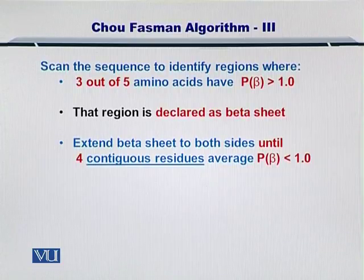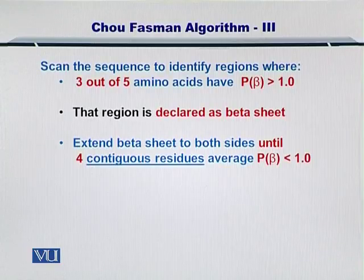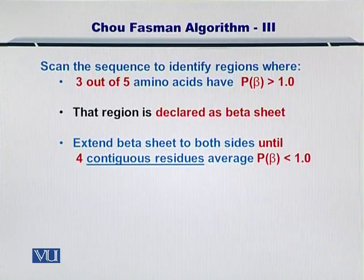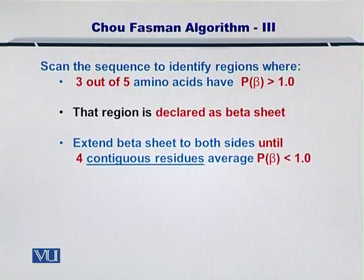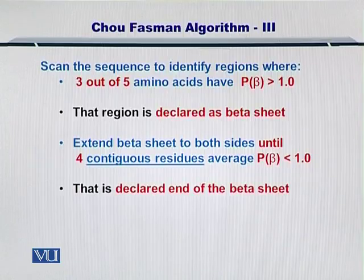You extend the beta sheet to both sides until you find 4 contiguous residues with an average propensity for formation of a beta sheet less than 1. If you find such 4 amino acids with a propensity that has fallen below 1 towards formation of a beta sheet, then you stop forming beta sheet out of those amino acid residues.